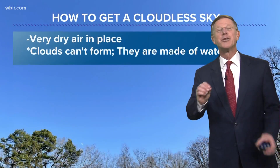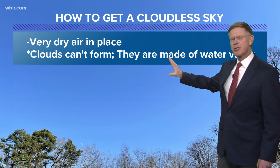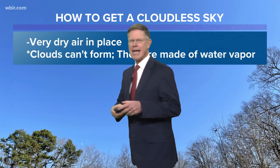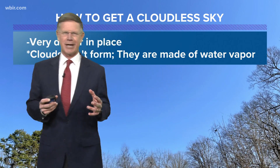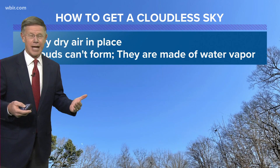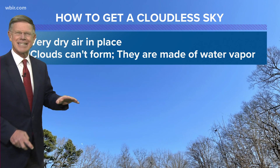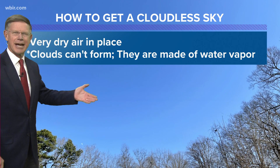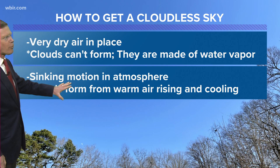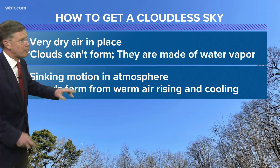First of all, dry air. Beautiful picture here, by the way, with the blue skies — very dry air in place. Clouds cannot form. You have water vapor in the air; it's invisible, and that water vapor doesn't become visible in the form of clouds until it cools and condenses. So you've got to have the air rising, warm air rising and then cooling and condensing. That's how you get clouds to form.